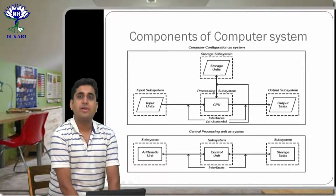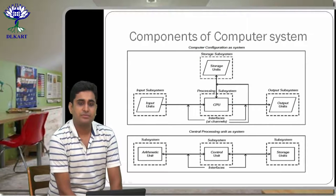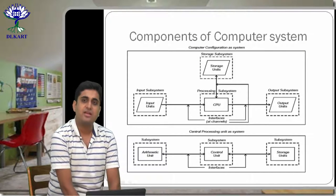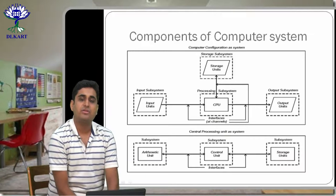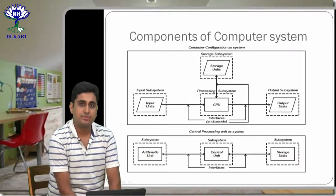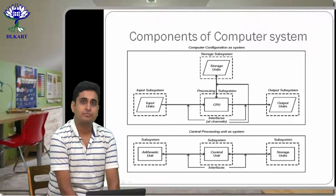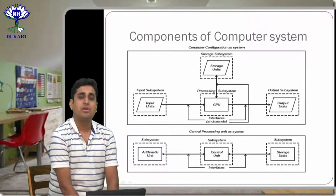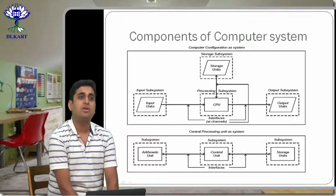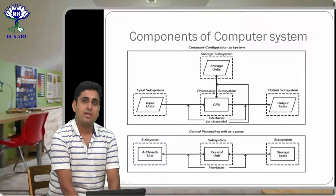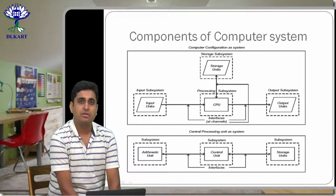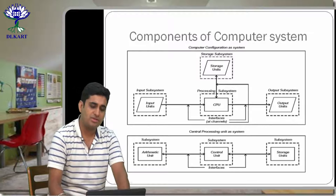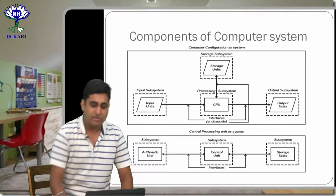Looking at another diagram — components of a computer system — you will see there is an input unit and an output unit. This entire unit is given the name 'subsystem,' meaning that within an entire system we have smaller subsystems. One subsystem is the input subsystem, encompassing all the different devices and technologies attached to it, from where we get input. Similarly there is the output subsystem.